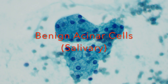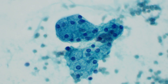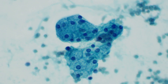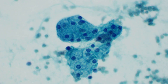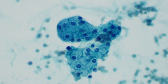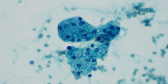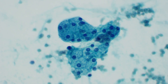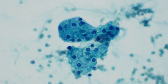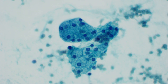One type of cell that we would typically see in the salivary gland are acinar cells. Acinar cells play an important role in the production of saliva. When we see them on cytology they tend to form groups that we refer to as clusters of grapes. These are just the normal cells that we would see if we were to sample one of the salivary glands.